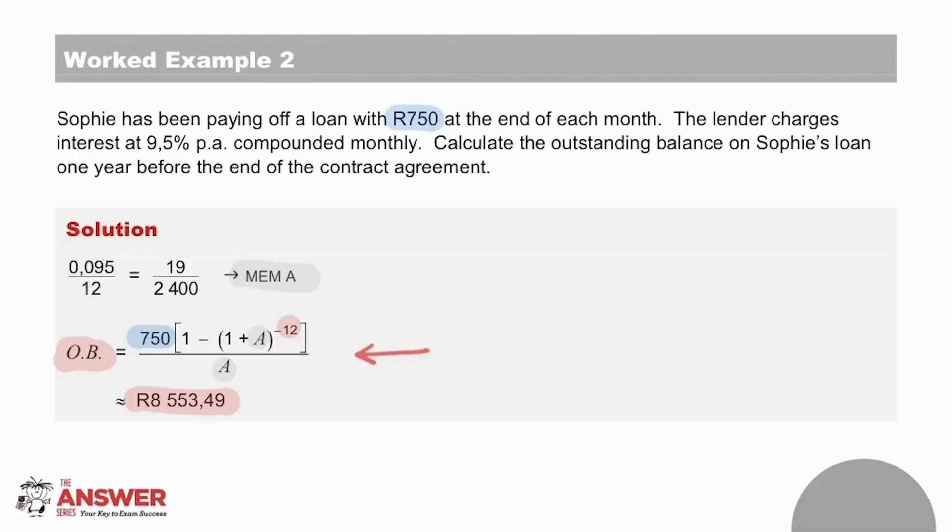So just to recap on these first two worked examples, in worked example 1 we knew what the loan was, and so we used method 1 to calculate the outstanding balance. In worked example 2, we didn't know what the loan was, but we knew how much time was left on the loan, and so in this case we used method 2 to calculate the outstanding balance.